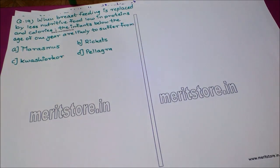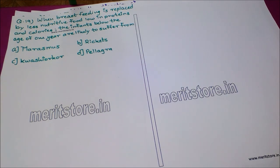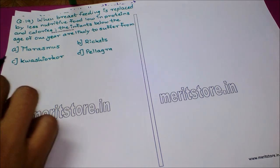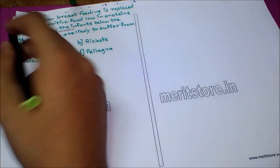The next question: when breastfeeding is replaced by less nutritive food low in proteins and calories, infants below the age of one year are likely to suffer from — marasmus, rickets, kwashiorkor, or pellagra. The correct answer is marasmus.